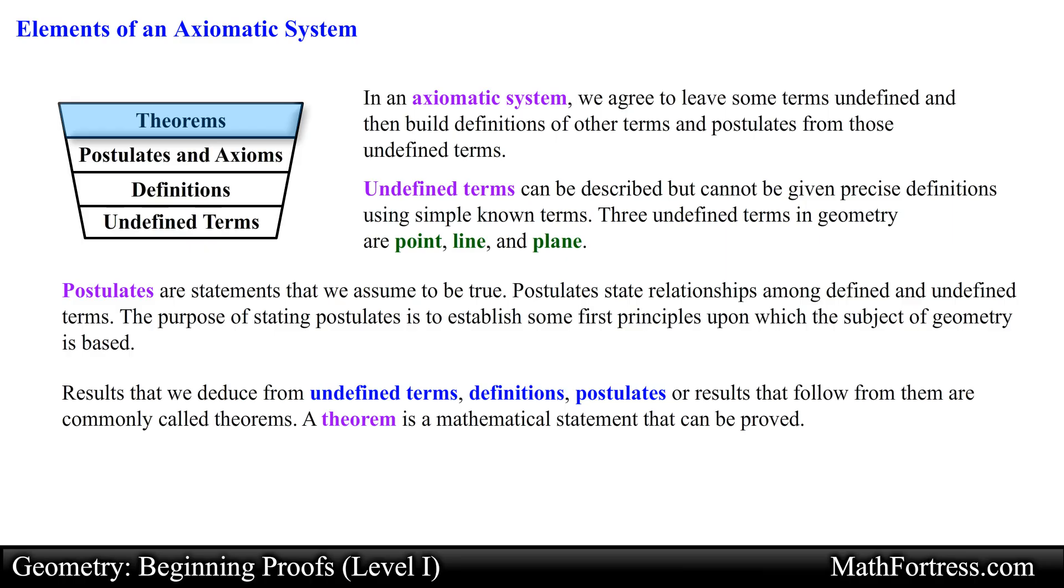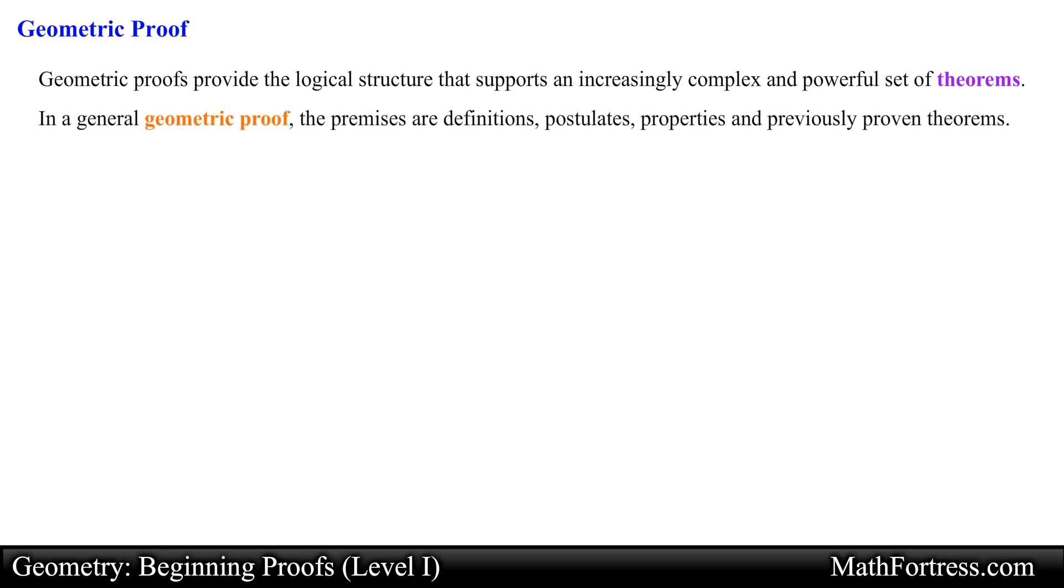A theorem is a mathematical statement that can be proved. Geometric proofs provide the logical structure that supports an increasingly complex and powerful set of theorems. In a general geometric proof the premises are definitions, postulates, properties, and previously proven theorems.